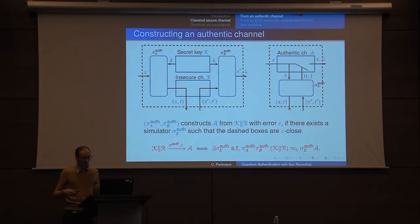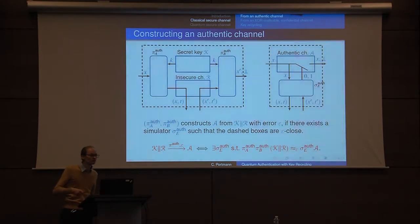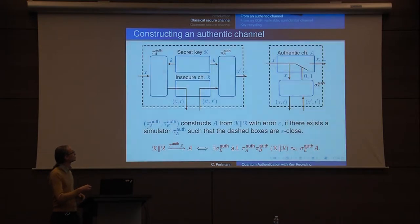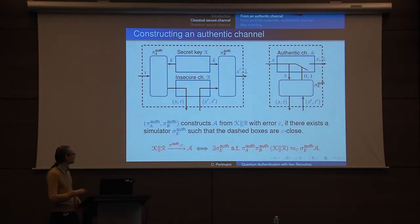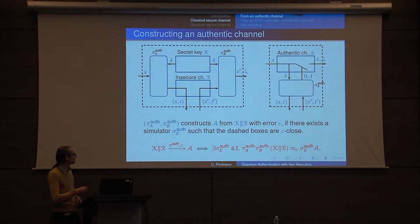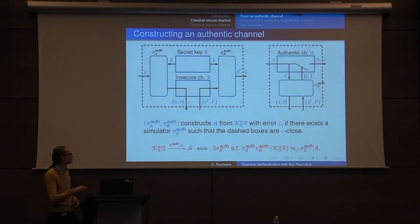If the two systems are ε-close, we say our protocol constructs the authentic channel given these resources. In the abstract cryptography framework, we see cryptography as a resource theory: you start with some resources and construct new ones. In this case, you start with a key and an insecure channel and construct an authentic channel. The protocol is a map between resources, and security is satisfied if there exists a simulator such that the two systems are indistinguishable.